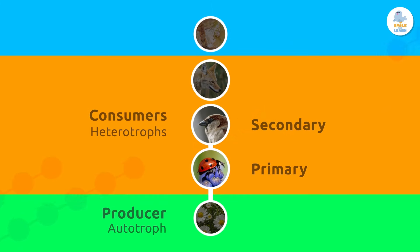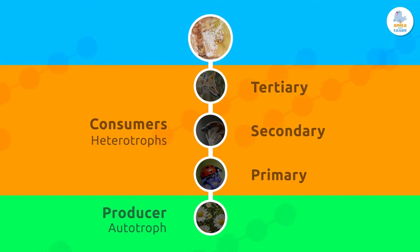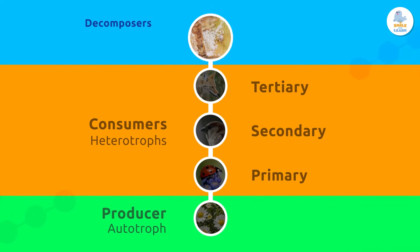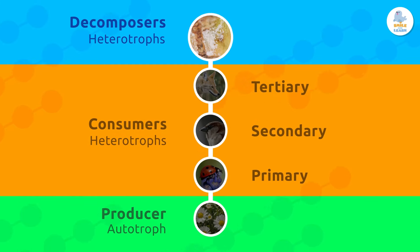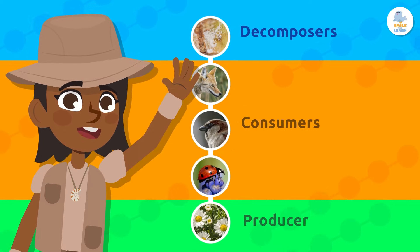Then animals that eat the secondary consumers are called tertiary consumers, like the coyote in our example. Finally, the fungi and bacteria that decompose the tertiary consumers when they die are called decomposers. Decomposers are very important because they restart the food chain. Thanks to them, it begins all over again.